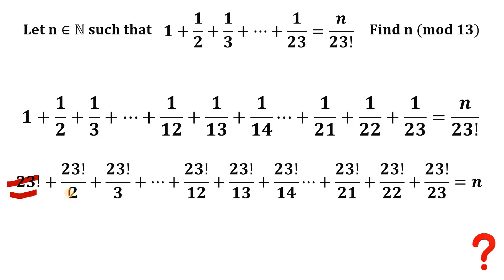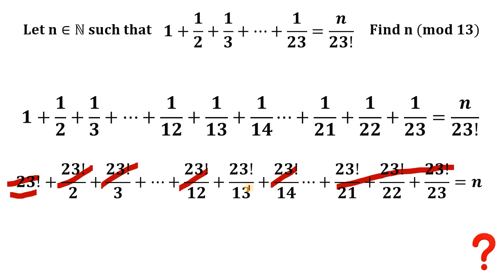23 factorial over 2 also has a factor of 13, so dividing by 13 gives remainder 0. This term is 0 mod 13, this is 0 mod 13, and all of these are 0 mod 13 — except for the middle term, because eventually we cancel out the factor of 13, so that term is not divisible by 13.